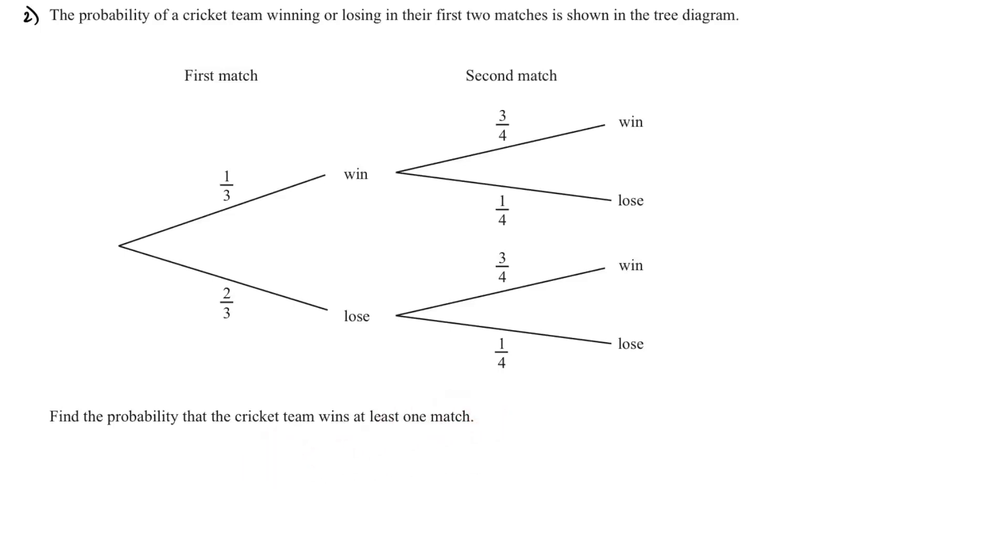There are two ways to do this. One way is you find that it will win the first match and the second match, or it will win the first match and lose the second match, or it will lose the first match and win the second match. This will give us the probability. We cannot take lose and lose because there's no win there.